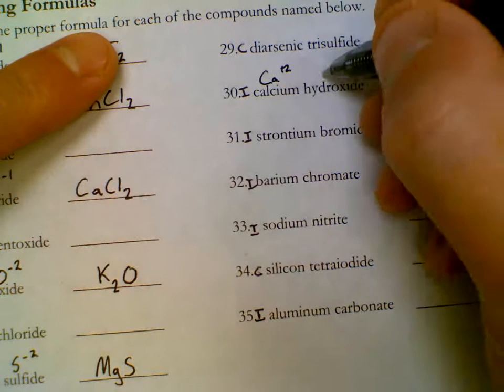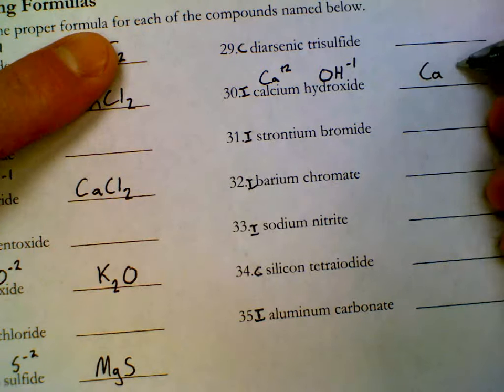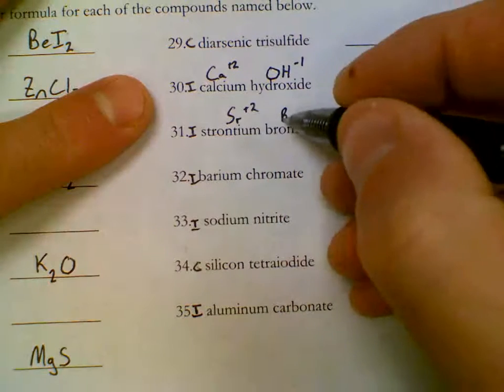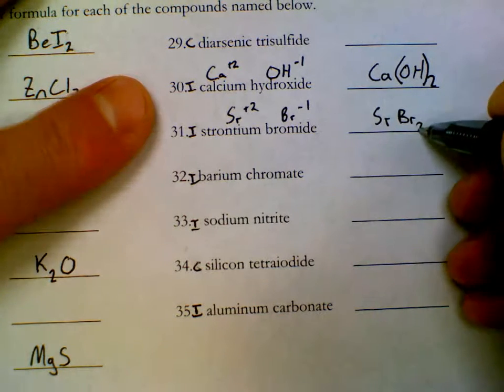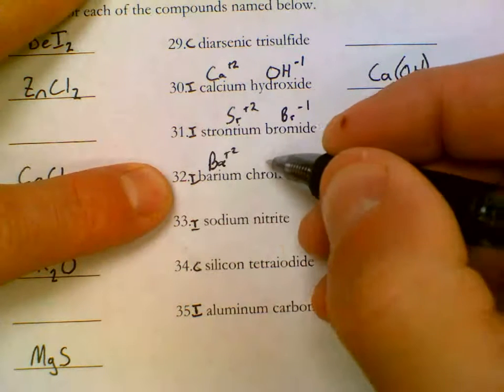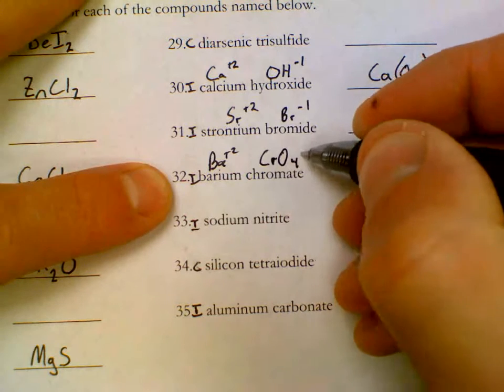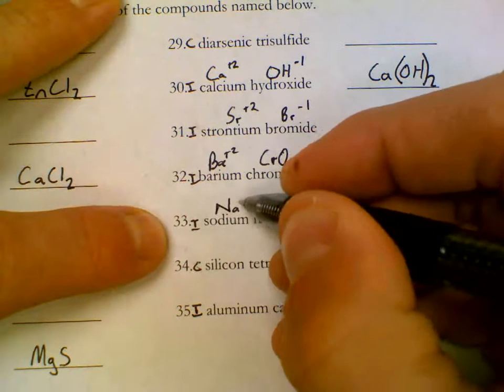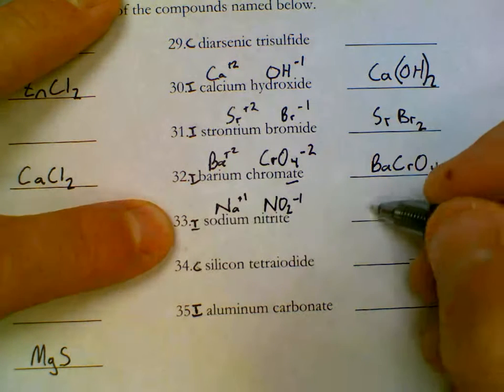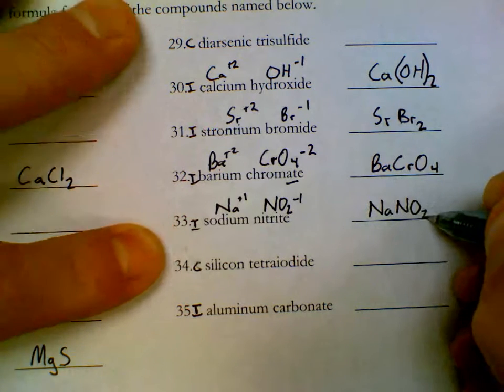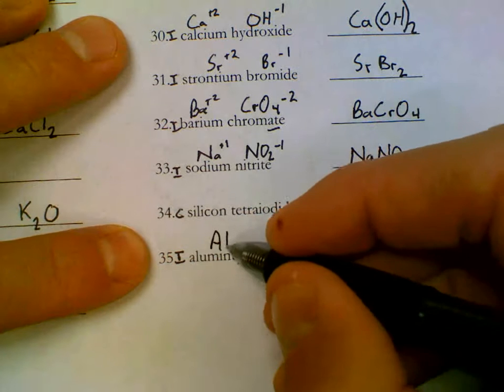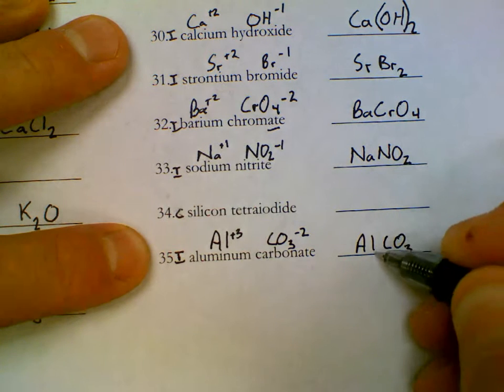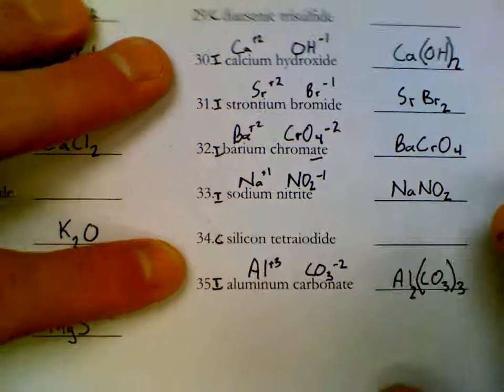On the right hand side, CA is plus 2. Hydroxide is OH to minus 1. Ca OH 2, but then we need parentheses around the polyatomic ion. Strontium is SR plus 2, bromide is Br minus 1. SR Br sub 2. Barium is a group 2 plus 2 ion. Chromate is a polyatomic ion, ATE ending. Plus 2 minus 2 cancel. Sodium is Na plus 1, nitrite is NO2 minus 1. Plus 1 minus 1 cancel. AL is a plus 3, carbonate is a minus 2. ALCO3, taking these charges and crisscrossing.